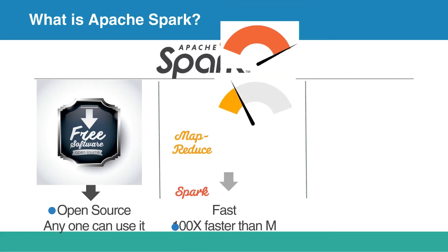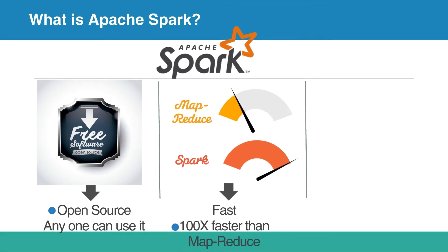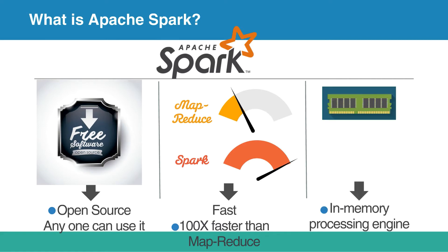Apache Spark is fast. It is said to perform 100 times faster than its traditional counterpart MapReduce framework. It is an in-memory processing engine. In fact, Spark's in-memory processing capability attributes to its speed. Spark stores the intermediate data in memory in most cases. When the intermediate data is very large, it starts spilling some of those data to the disk.